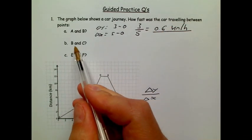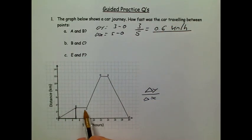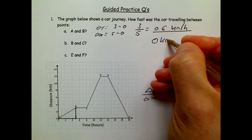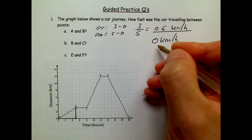So B and C then—so point B, point C—well that's nice and simple because I've got a flat line, and we know a flat line on a distance-time graph is a speed of 0. The object is stationary, so that's 0 kilometers per hour.